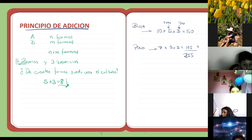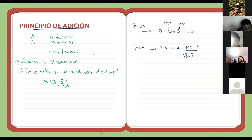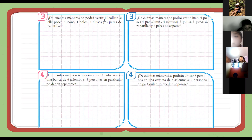Bien, estamos haciendo lo más básico posible para que se pueda entender. Entonces, cinco segundos para tomar la foto. Cinco, cuatro, tres, dos, uno. Listo, gracias. Un segundo, vamos a compartir. Ahí está. Listo. Avanzamos, entonces, con el problemita número tres.